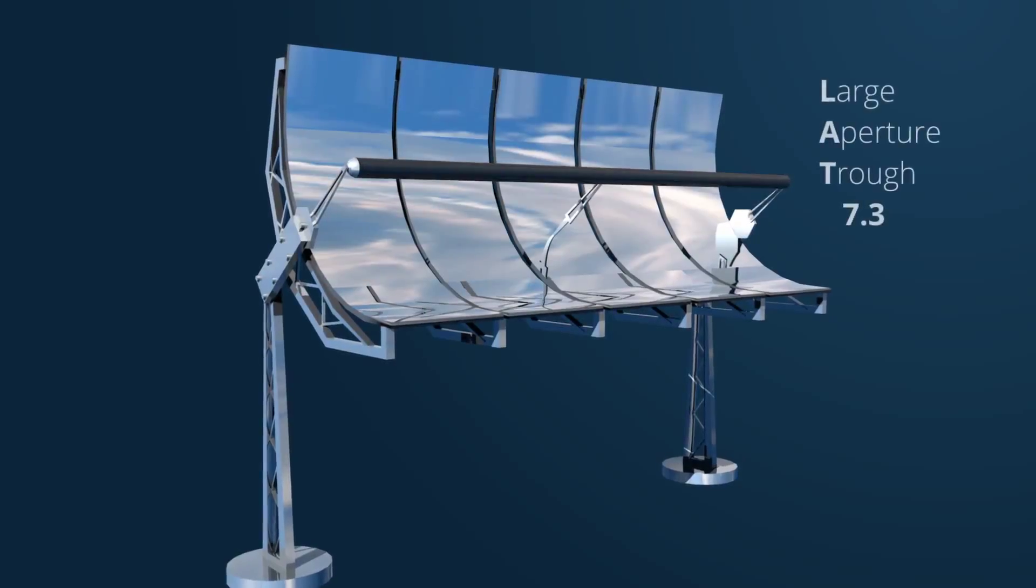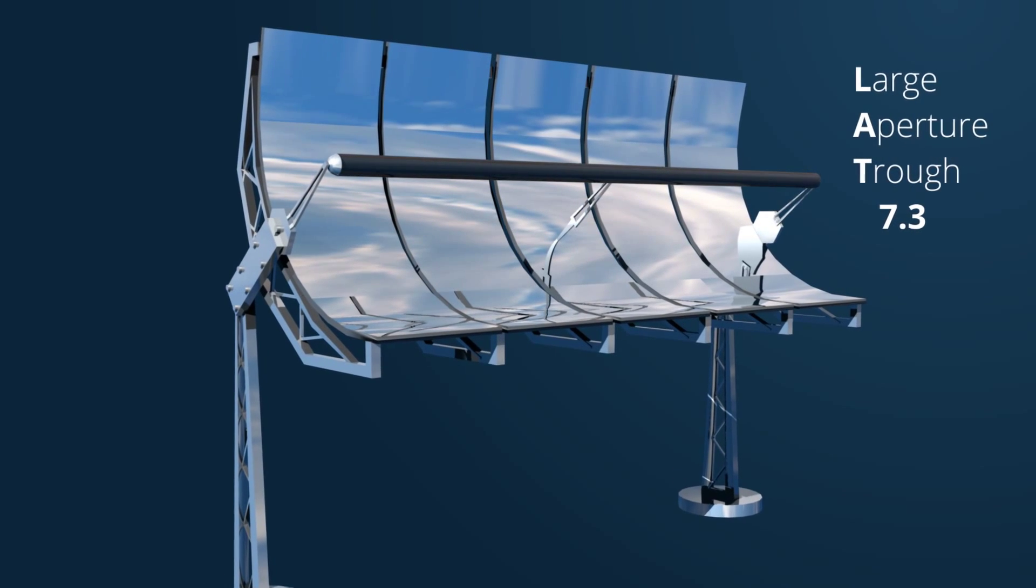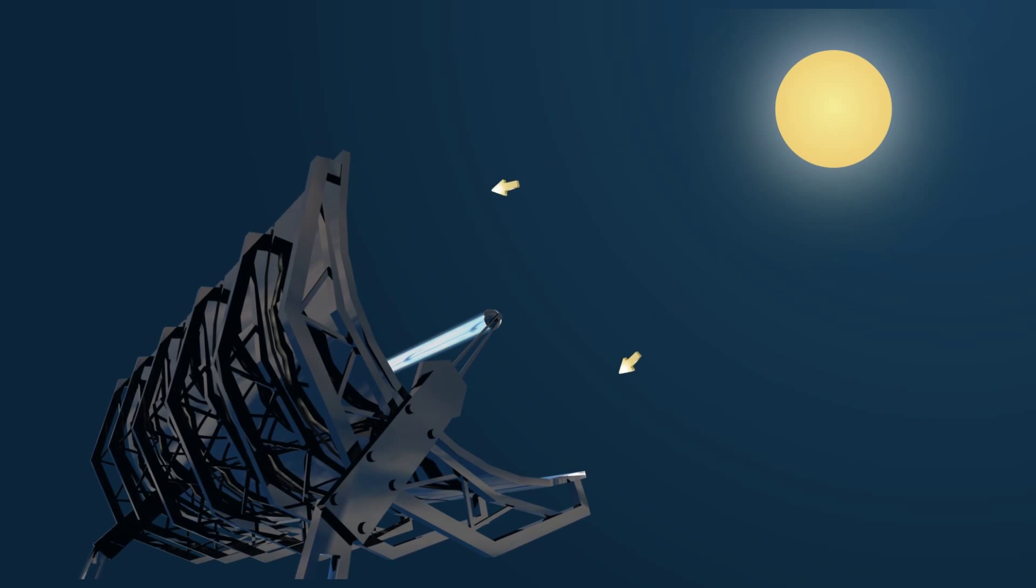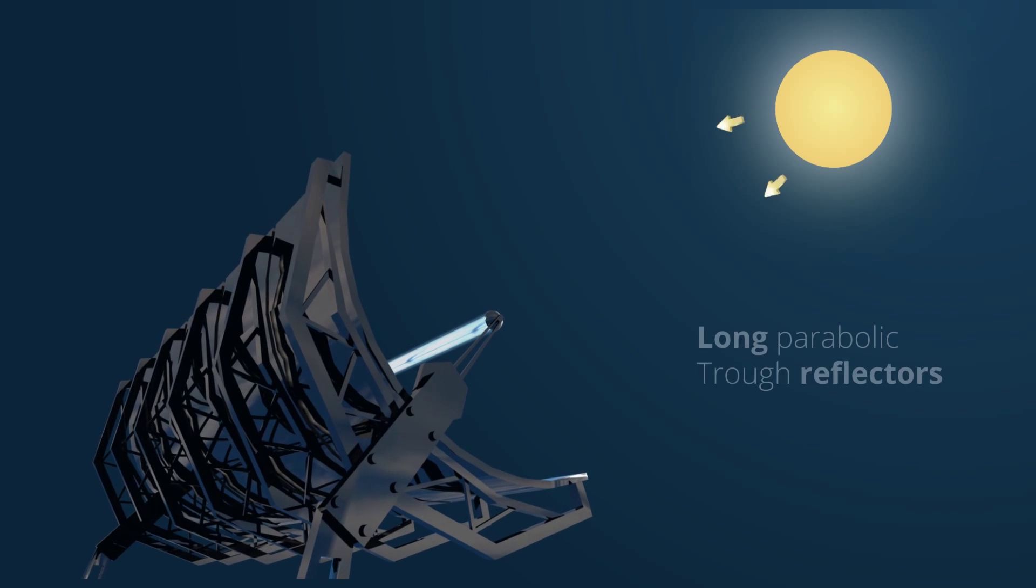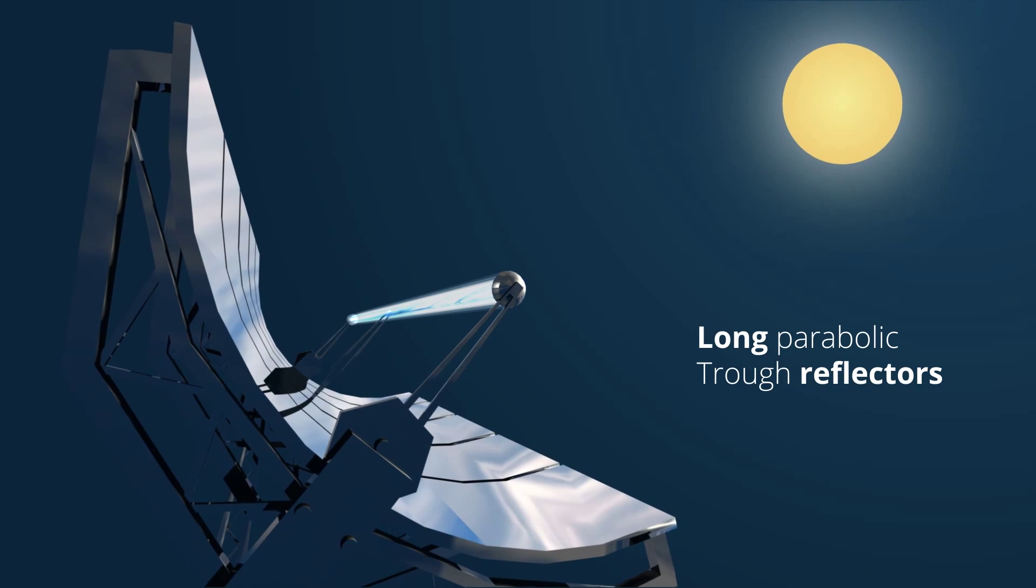The LAT 7.3 is a complete parabolic trough solar collector and tracking system. Its heat collectors are made up of long parabolic trough reflectors, each with a heat collecting tube.